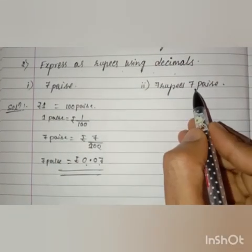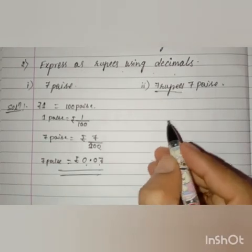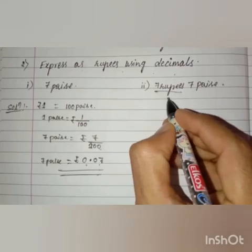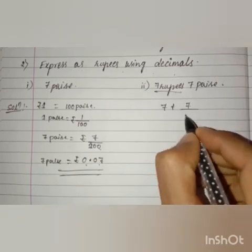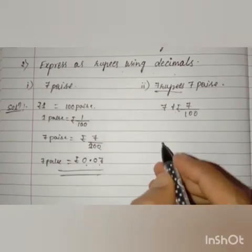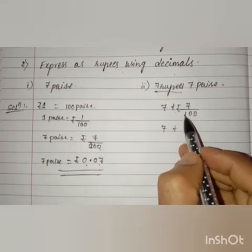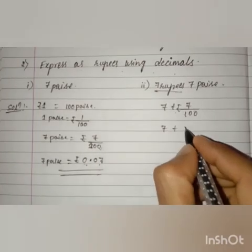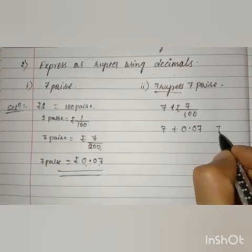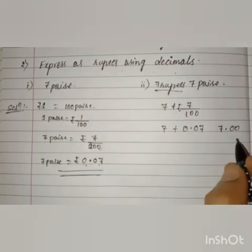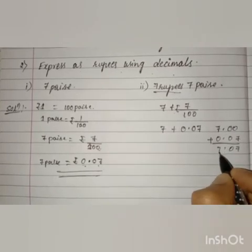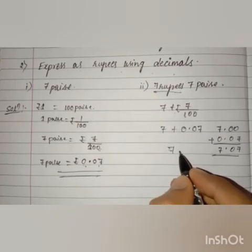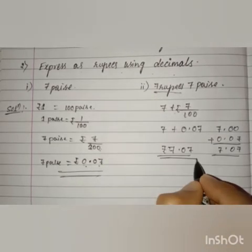Got it children? Next, question number 2: 7 rupees 7 paisae. Already we have 7 rupees, and we just need to convert the 7 paisae into rupees. 7 paisae means 7/100 rupees, which is 0.07. So 7 plus 0.07 gives us 7 rupees 7 paisae equals rupees 7.07. Got it children?